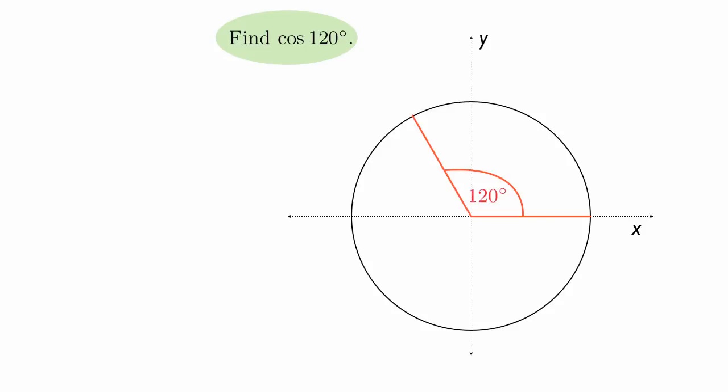we have the unit circle and we draw the angle in question, and cosine is defined to be the x value of the point formed by that angle. In other words, we have that point is equal to (cosine of 120 degrees, sine of 120 degrees). And so finding out what cosine of 120 degrees is, is the same as saying what is the x value of that point.